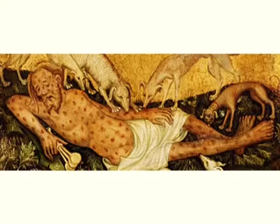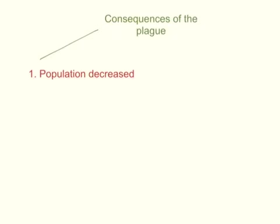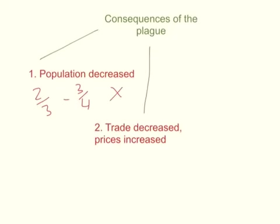It was a terrible disease, and it really broke families apart because they would often abandon people in their own family because it was so contagious, or catch the disease and die with them — a very sad, terrible thing. The consequences of the plague were many. Firstly, the population decreased; the estimate is between two-thirds or even three-quarters of the population of Europe died. Trade also decreased and prices increased, because merchants had died and therefore fewer people were able to participate in the economy, making products less available.